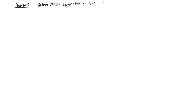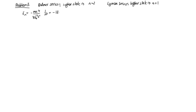For the Lyman series, this is from a higher state down to the ground state, n=1. The energy of a specific state is given by −me⁴/(8ε₀²h²) × (1/n²) = −13.61 eV × (1/n²). The transition energy equals E_final − E_initial. Longest wavelength implies the smallest transition frequency, since E = hf = hc/λ, so λ is longest when the transition energy is smallest.